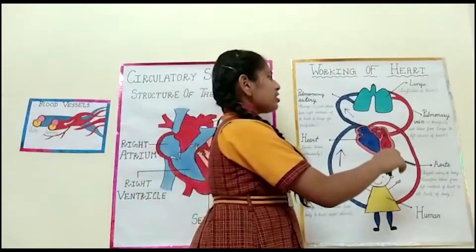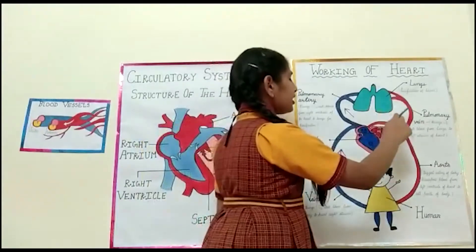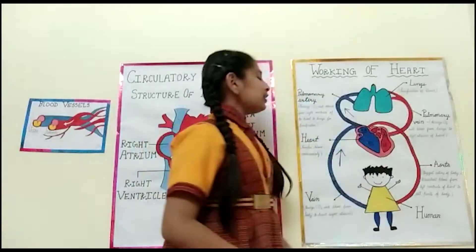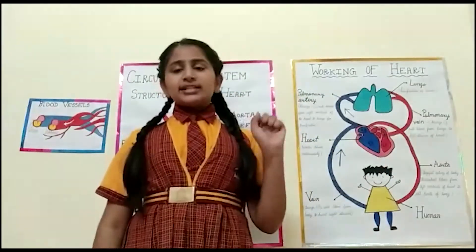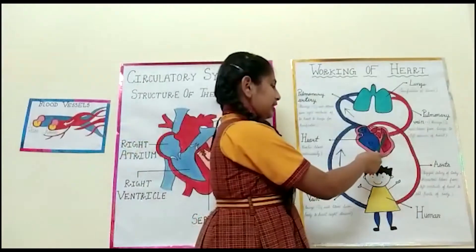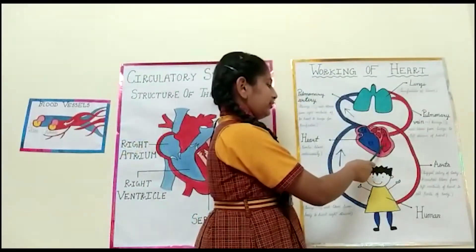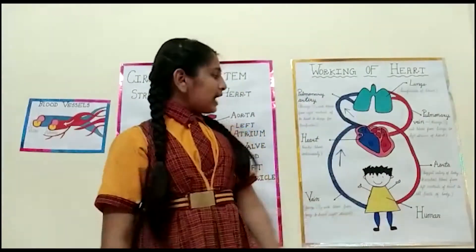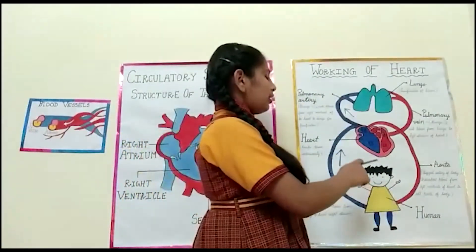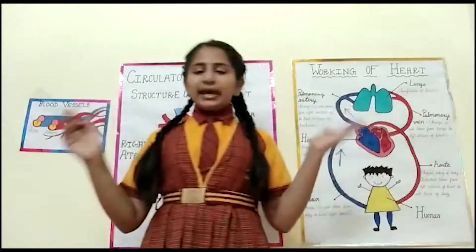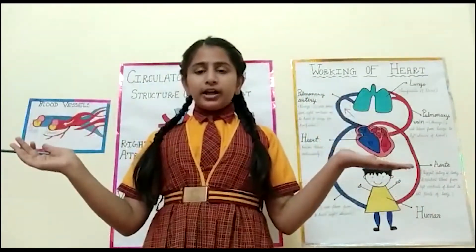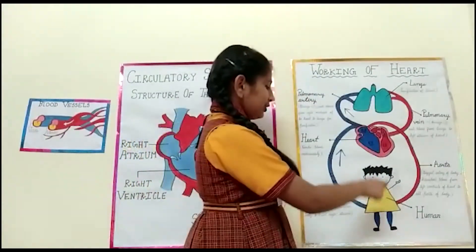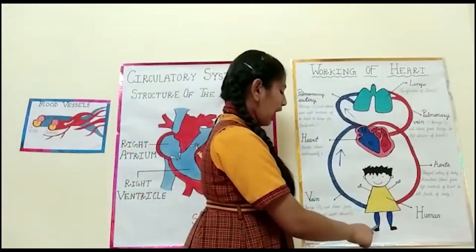This oxygen-rich blood comes back to the heart into the left atrium. Then again the heart contracts and releases, and this blood goes to the left ventricle of the heart. Then again the heart contracts and releases, and this blood is given to the blood vessel named the aorta. The aorta is the biggest artery of our body and it transports the blood from the left ventricle to the whole parts of our body.